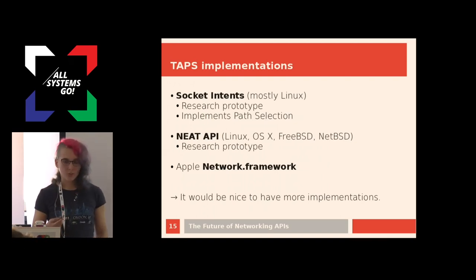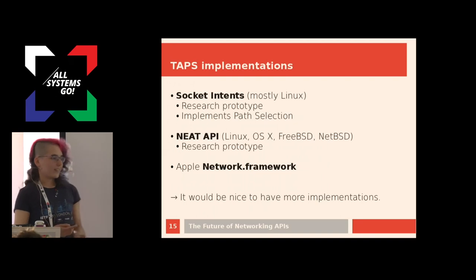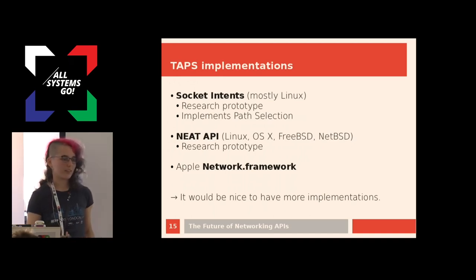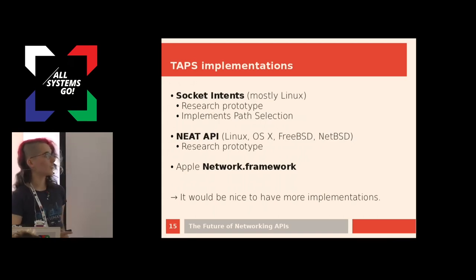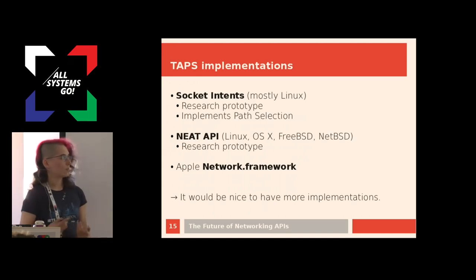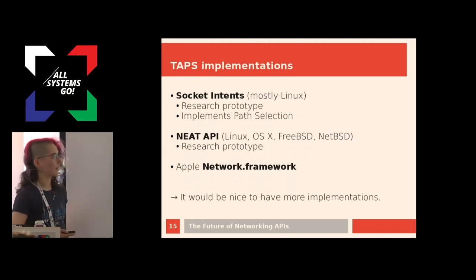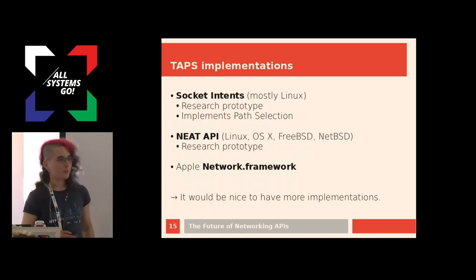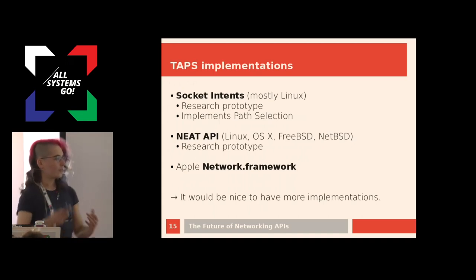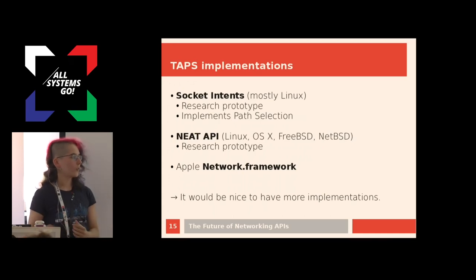A connection might also fail, and you can get a send error, a connection error, or a close. Now about implementations, which is the most interesting part. As I said, this is a proposed abstraction for an API, and now it needs to be implemented. There is the socket-intents prototype, which is part of my research that I talked about last year at this conference. It's a research prototype that does not do transport protocol selection, but path selection. And there is the NEAT API. NEAT was an EU project that developed a lot of this transport feature stuff and implements much of it. It's also a research prototype, and a famous quote by one of the authors is: 'well, it's open source, somebody should develop it, but it's not me right now.' So this code is there, but I'm not sure how much it's going to advance to get closer to the API that we are now actually developing.